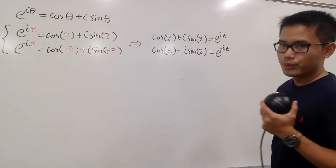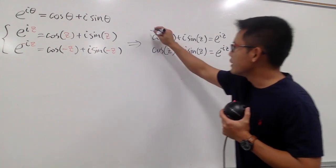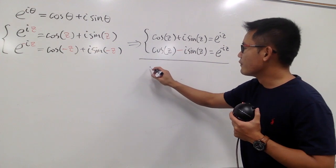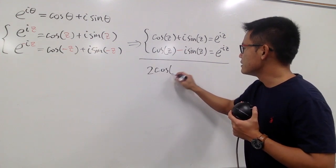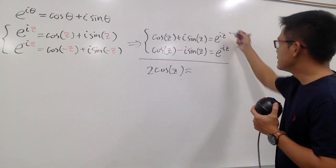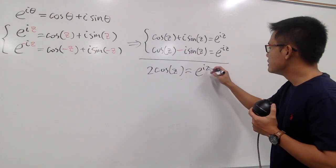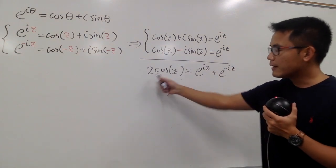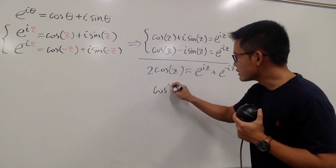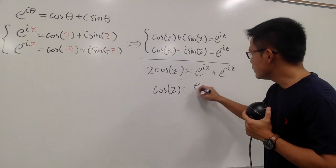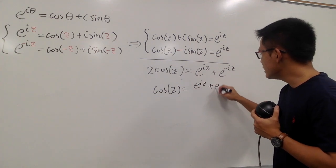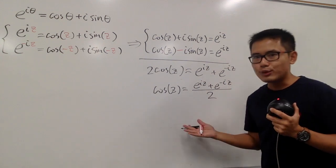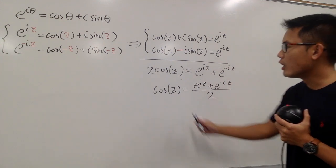To find cosine z, we add the two equations together. The i sine z terms cancel, and cosine z plus cosine z gives two cosine z, which equals e to the iz plus e to the negative iz. Dividing both sides by two, we get cosine z equals e to the iz plus e to the negative iz, all over two. This is the complex definition of cosine z.